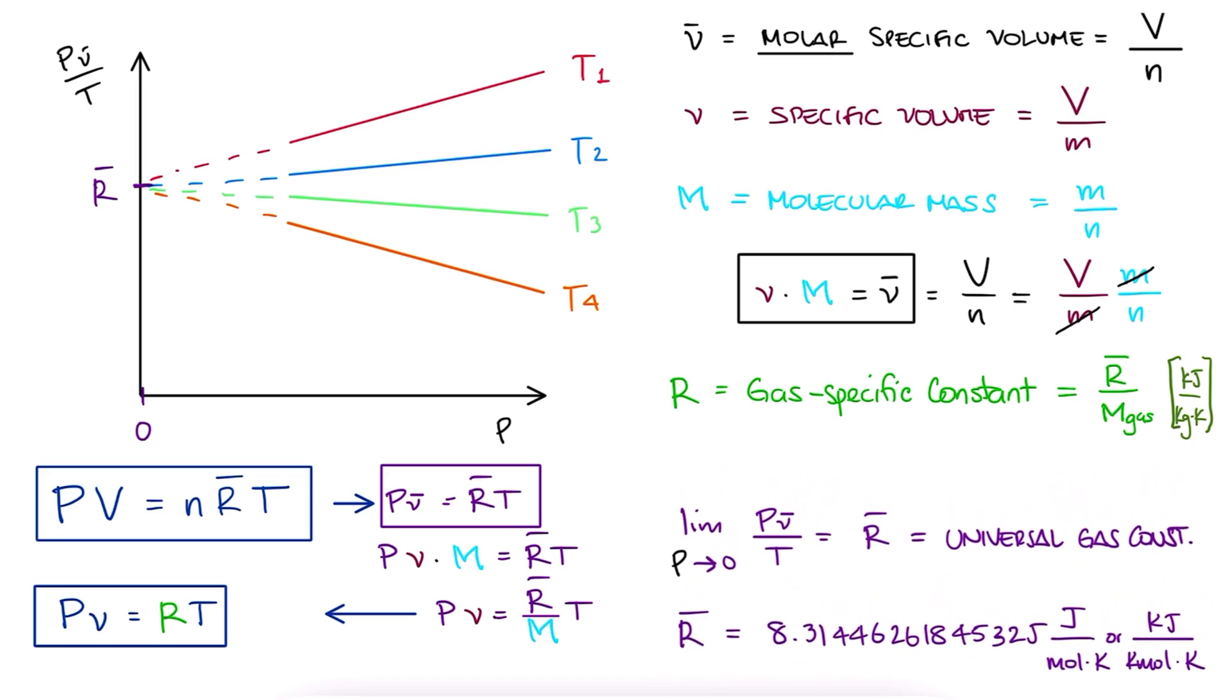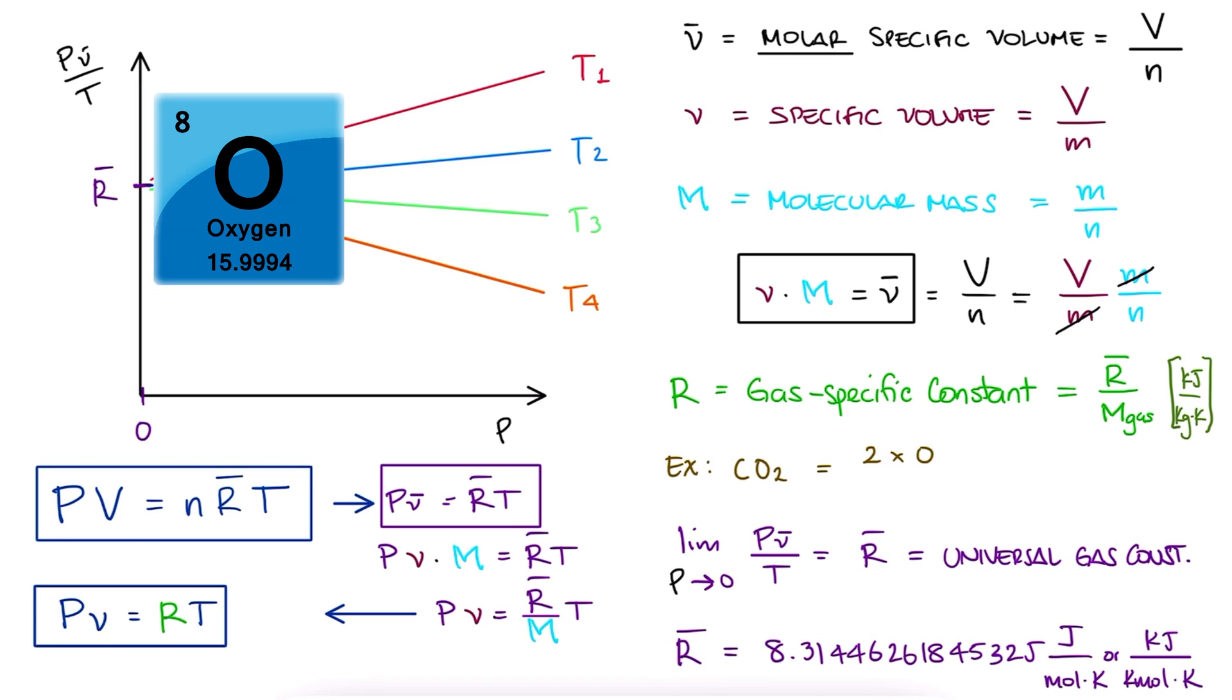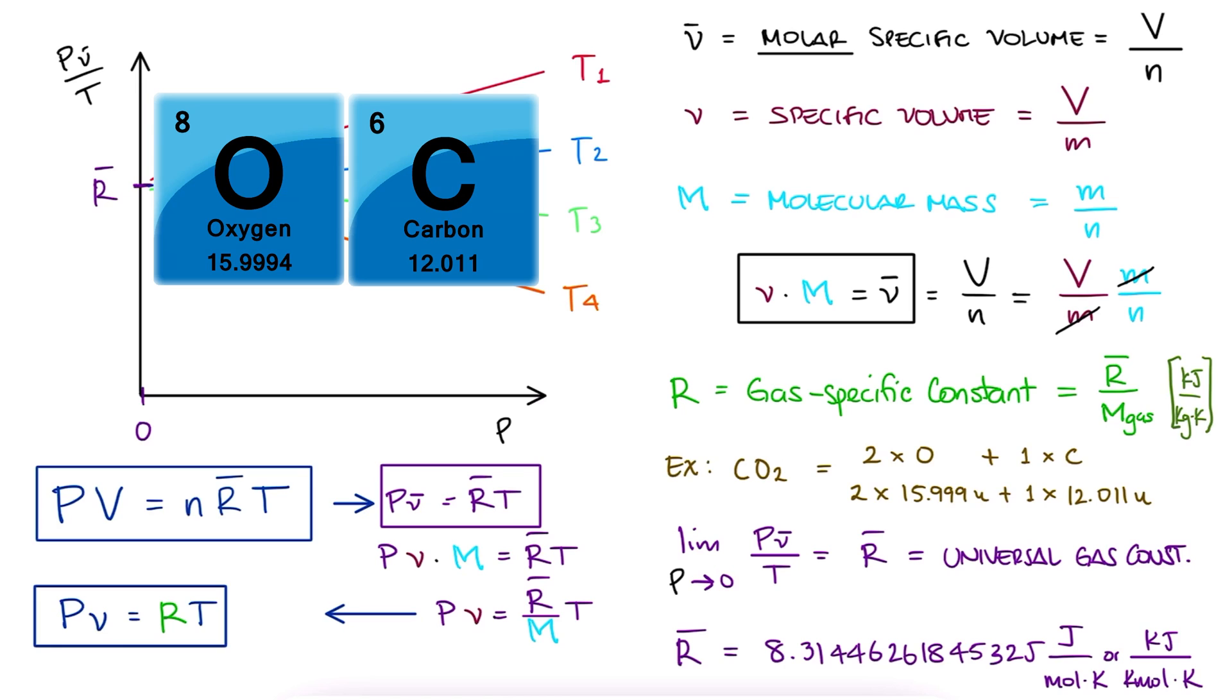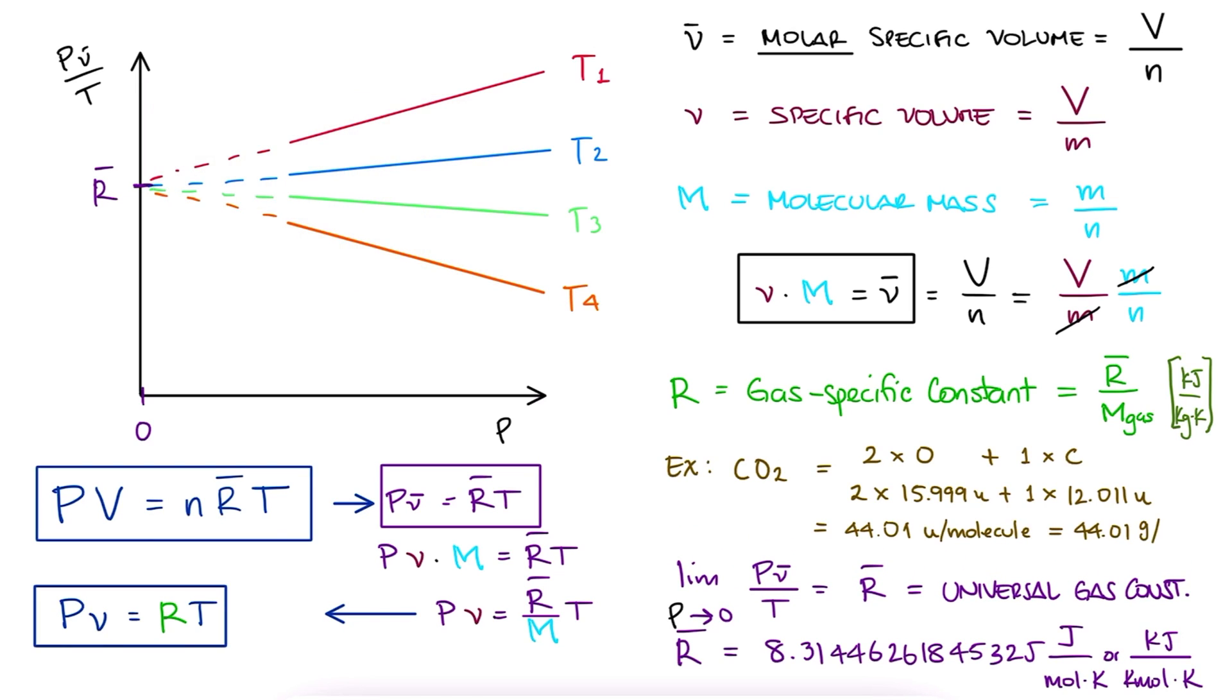For example, carbon dioxide would be two atoms of oxygen at 15.999 Daltons each, plus one atom of carbon at 12.011 Daltons or 44.01 Daltons per molecule, or what is the same, grams per mole.